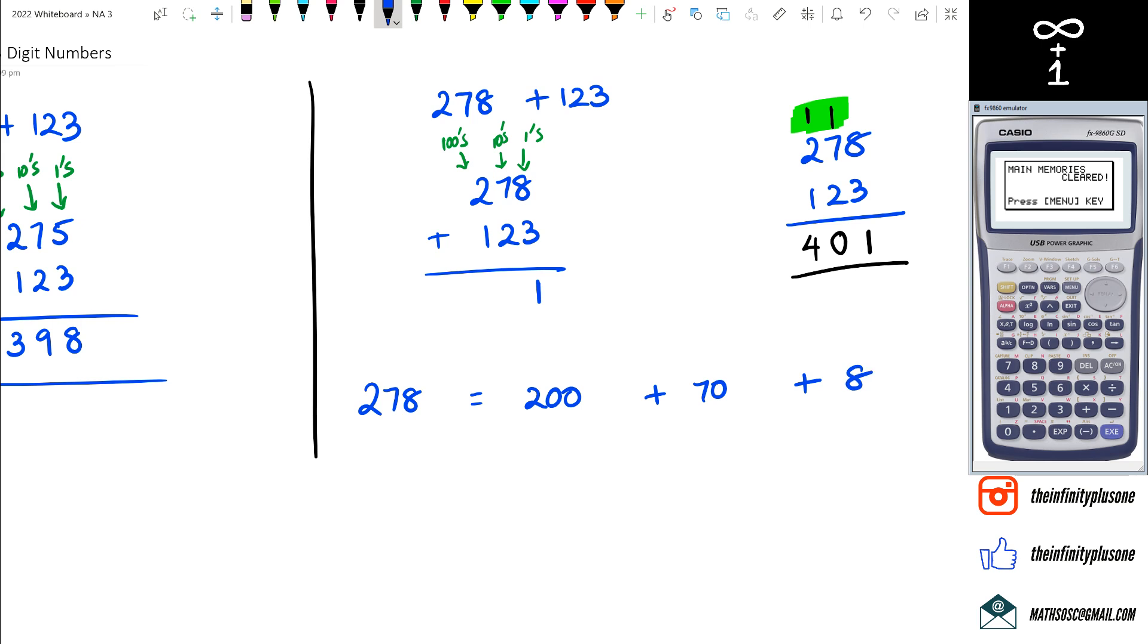Because if you think about it, two is in the hundreds column which is the same thing as saying 200, seven is in the tens column so it's 70, and then we've got eight which is in the ones column so it's just 8. So if we look at 123 we can split that up as 100 plus 20 plus 3.